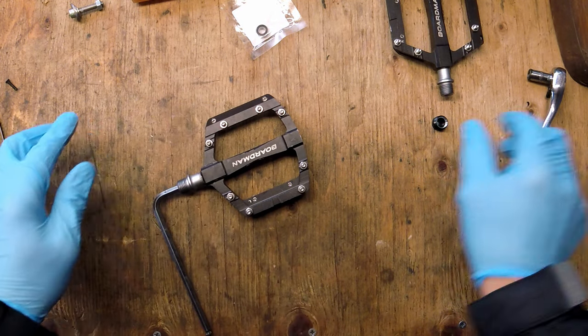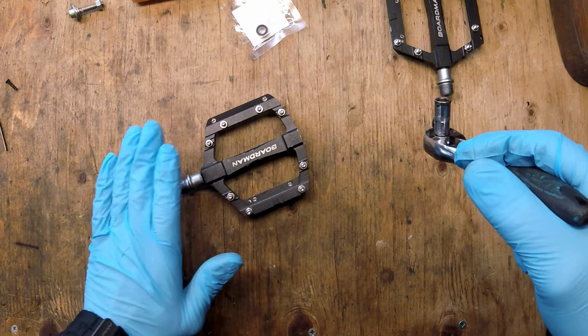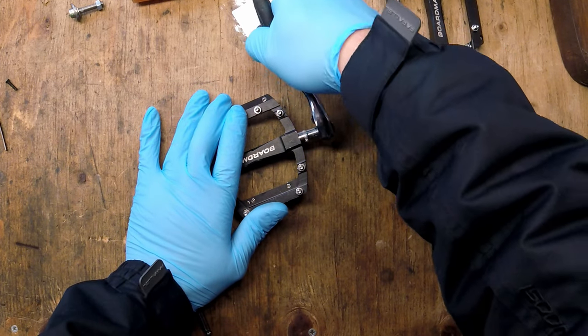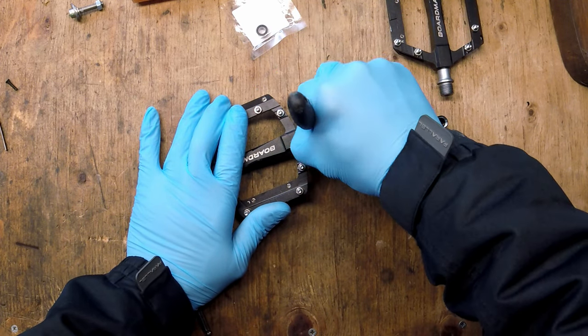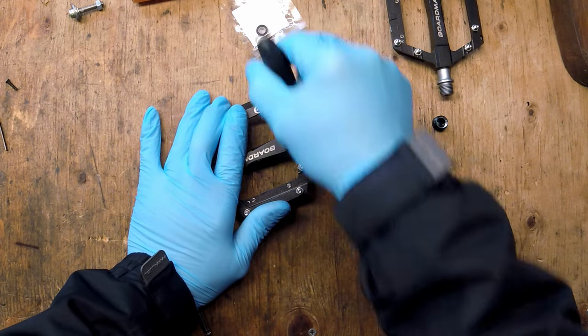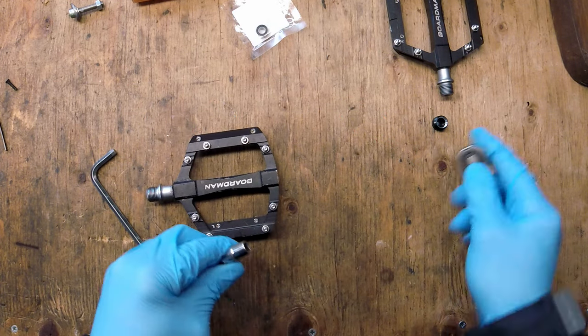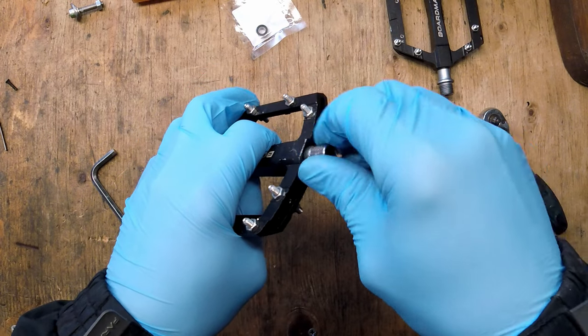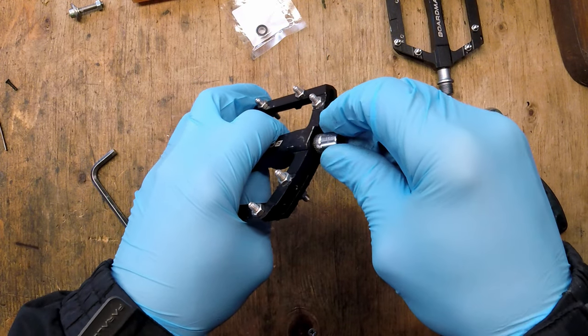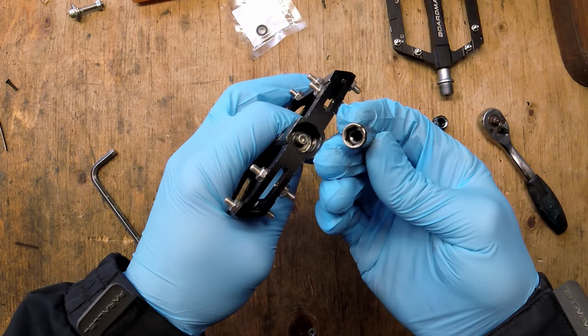I want to hold the spindle with the allen key and then just loosen off the nut which holds the axle in place. And this is really easy to do. These are just my pedals but this routine applies to most pedals out there.